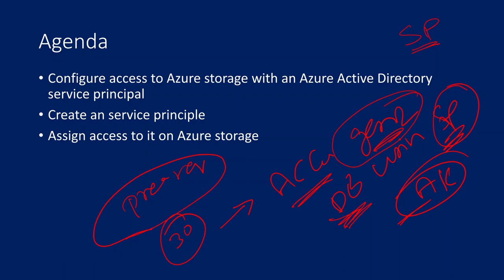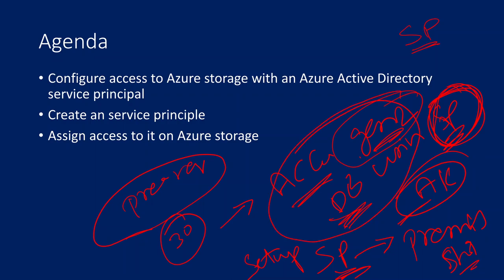Firstly, the service principal we want to use to access the storage account — we need to set it up first. We need to get proper permissions or roles on the storage account for this service principal. All of that we have to do first, and then implement the actual access to the storage account from Databricks using the service principal.